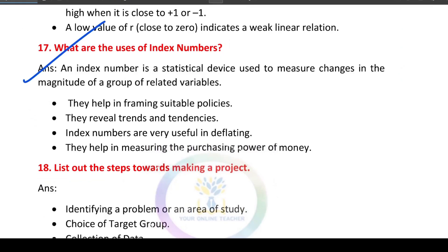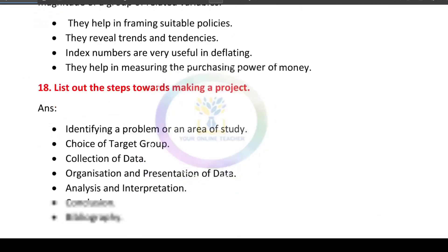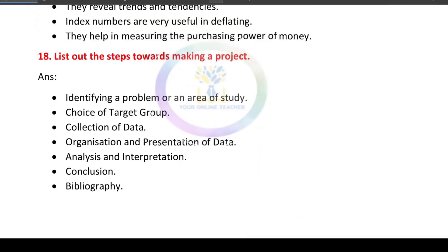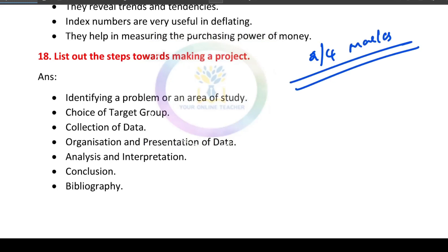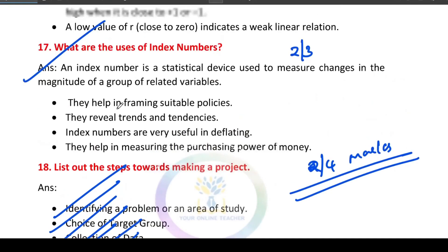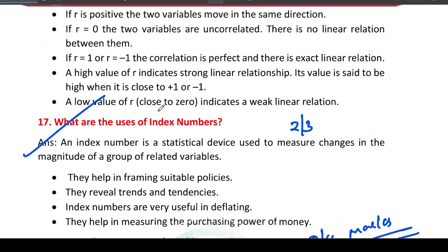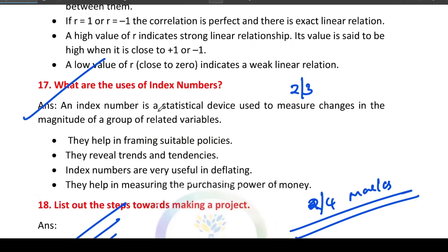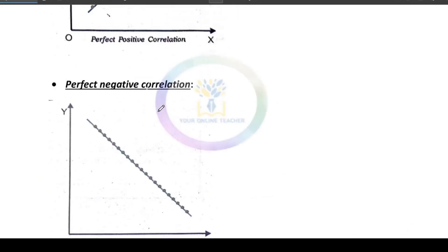The usage of index numbers will be worth two or three marks. Then for the project work, worth two to four marks, the steps are: identify a problem, choice of target group, collection of data, organizational presentation, analysis and interpretation, and conclusion with bibliography. Thank you. Bye.